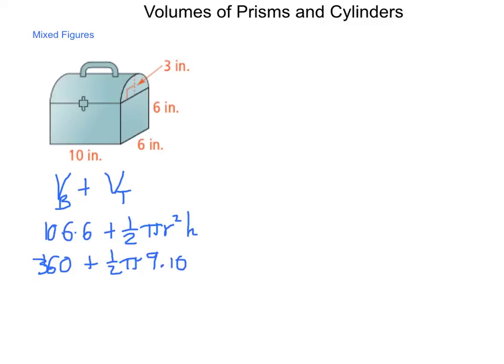Ten times a half is five. Five times nine is forty-five. So we have three hundred and sixty plus forty-five pi inches cubed.